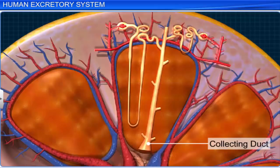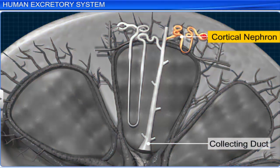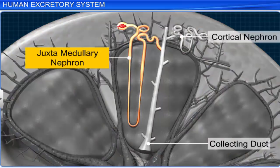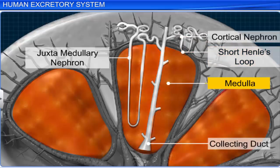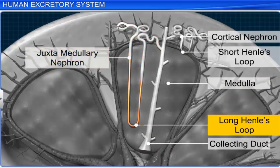The nephrons in the kidney are also distinguished as cortical nephrons and juxtamedullary nephrons based on the length of Henle's loop. Cortical nephrons constitute the majority of nephrons and have a very short Henle's loop that just about extends into the medulla, while the juxtamedullary nephrons have a very long Henle's loop that runs deep into the medulla.